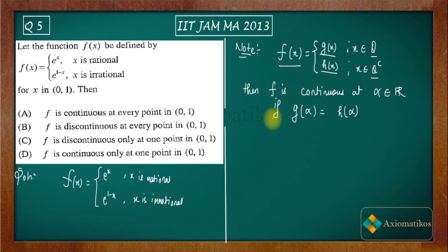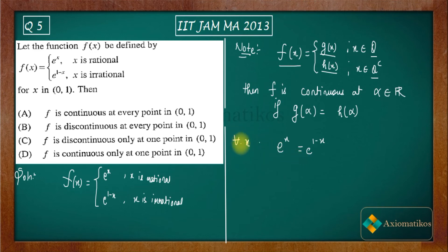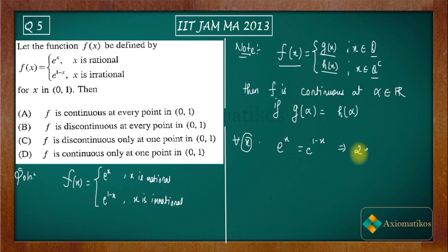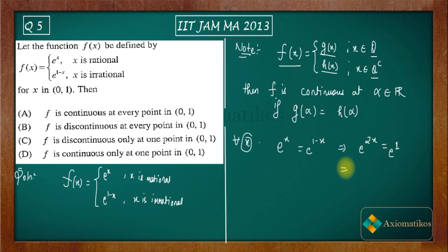So for all x, we need e^x equal to e^(1-x). If these two functions are equal, then f will be continuous at those x values. We can rewrite this as e^(2x) = e^1. Applying log to both sides, we get 2x = 1, so x = 1/2.